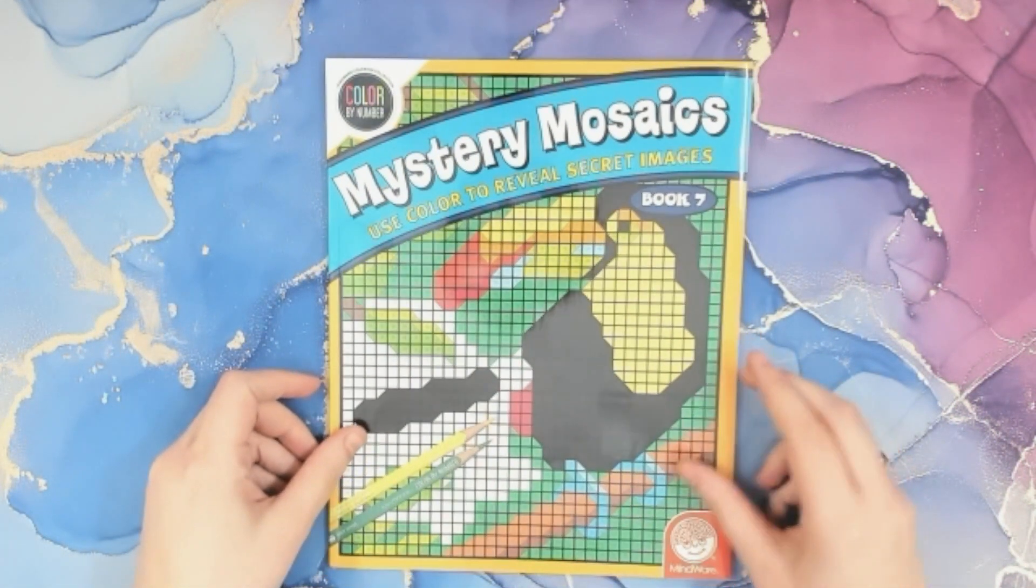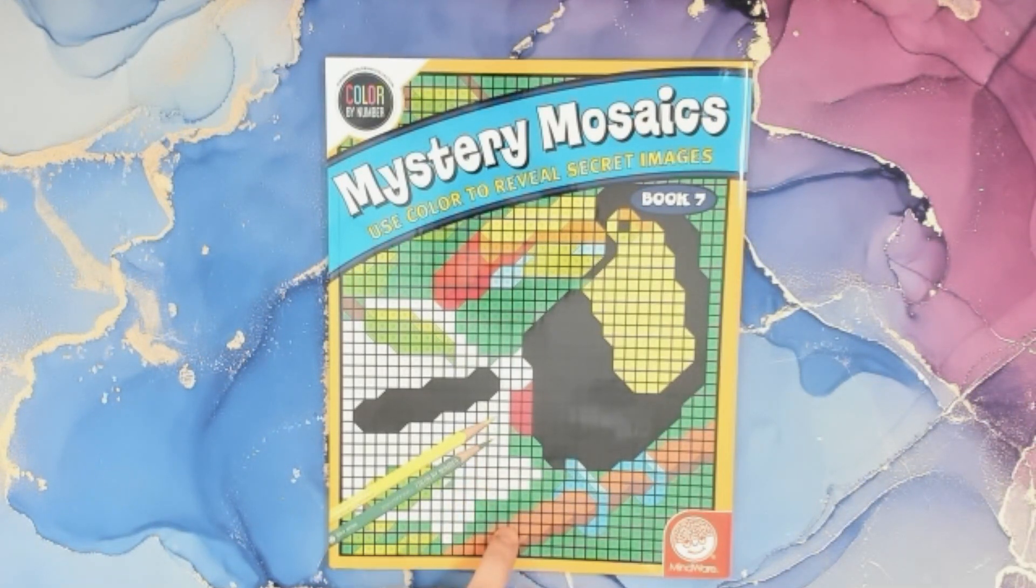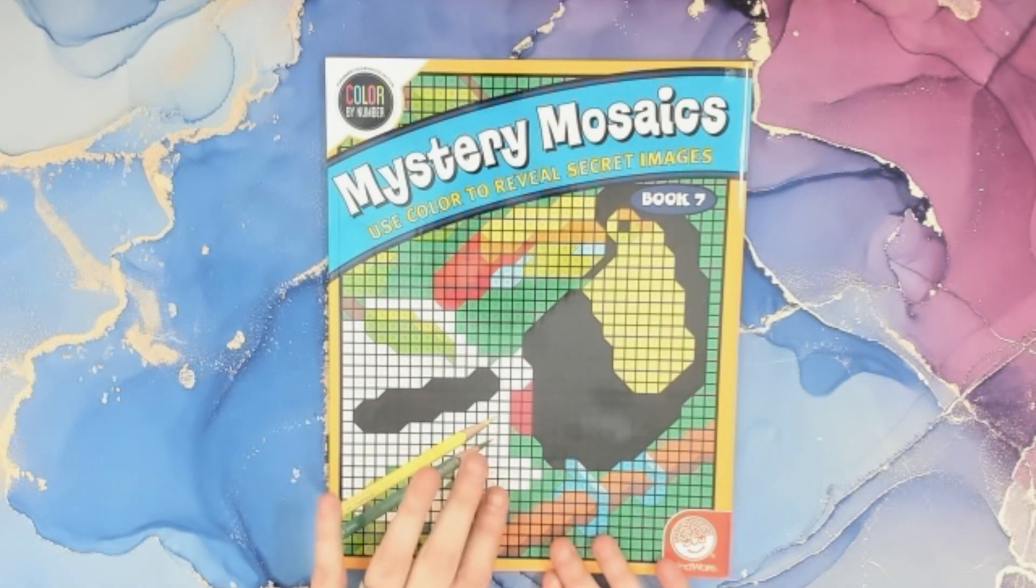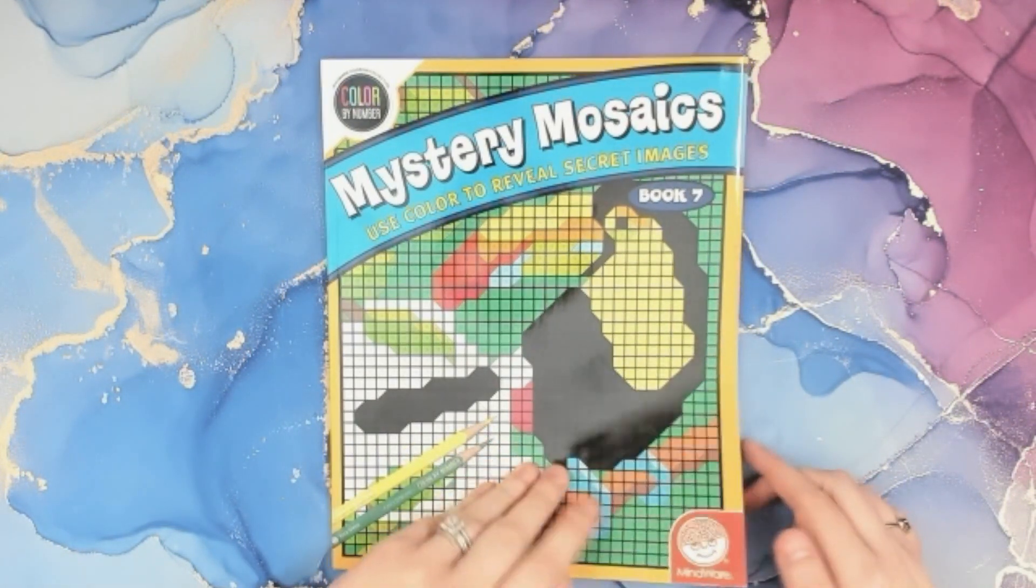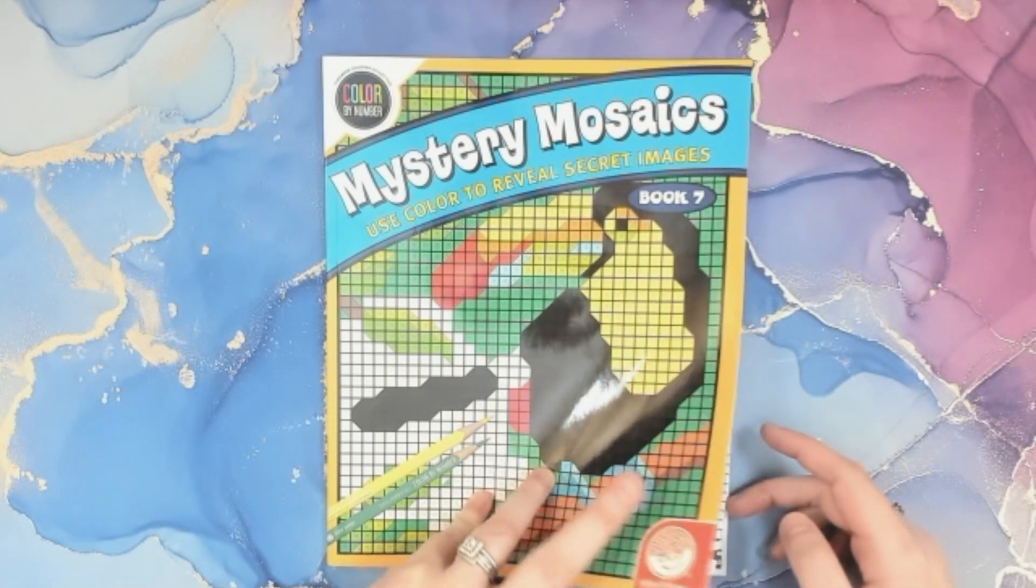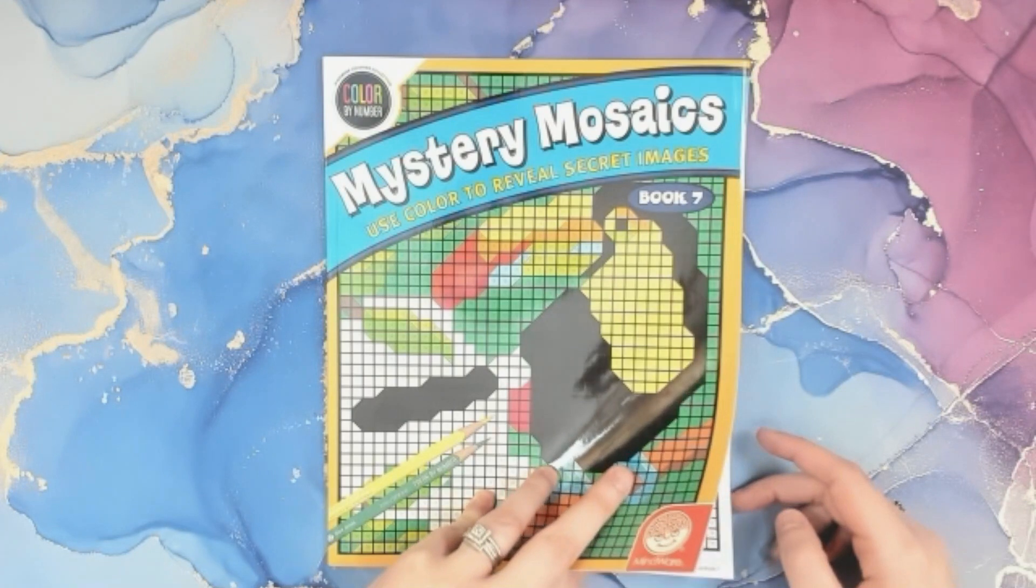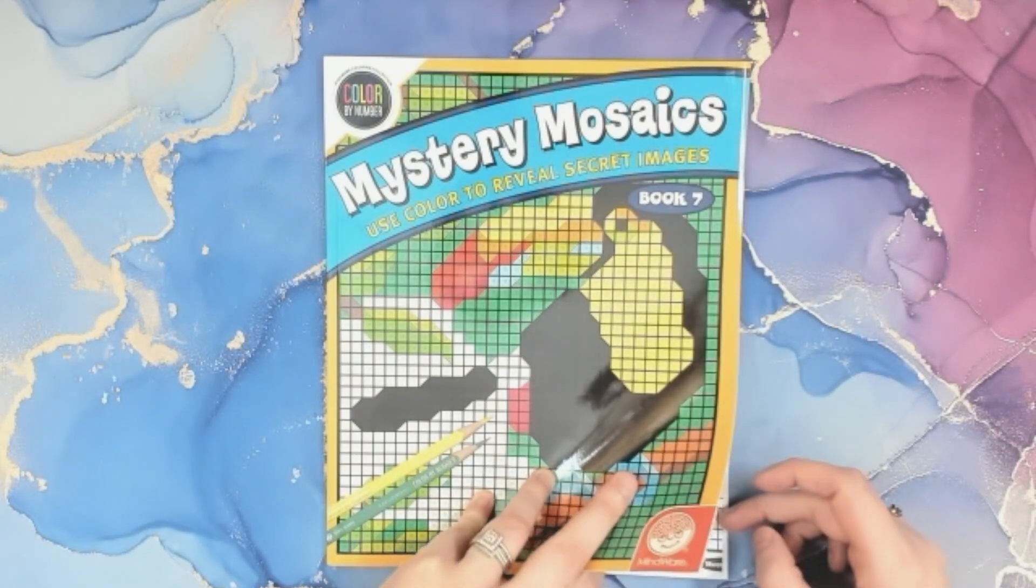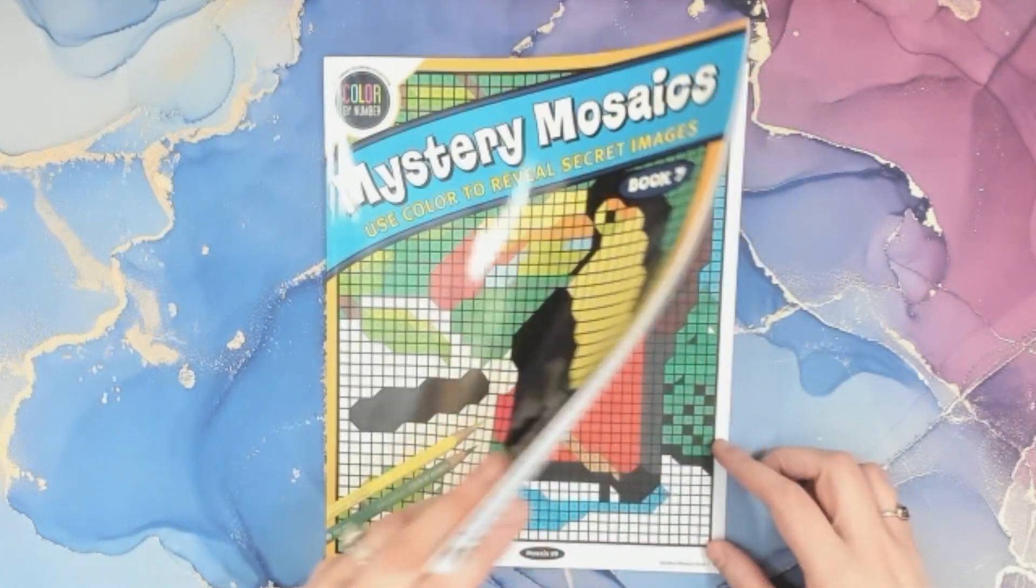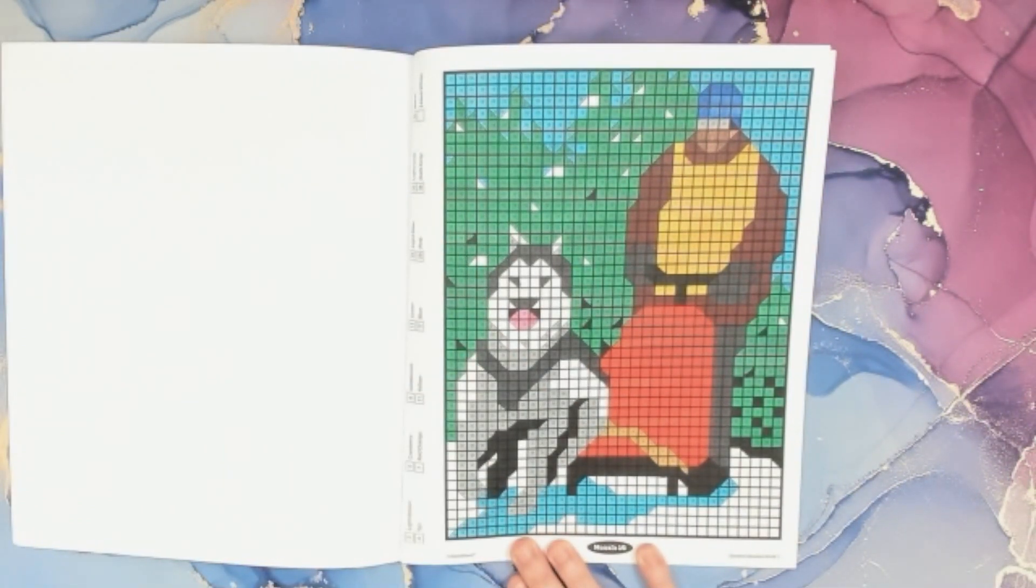The next picture I colored in was Mindware Coloring Collection Color by Number Mystery Mosaics, Use Color to Reveal Secret Images, Book Seven. Not sure if this one's still available on Amazon. I know some of them I can't find on there anymore. If it is, I'll link that down below. I've been leaving them in the book. I just put something behind it. This is the one that I colored. It's like a sled dog.